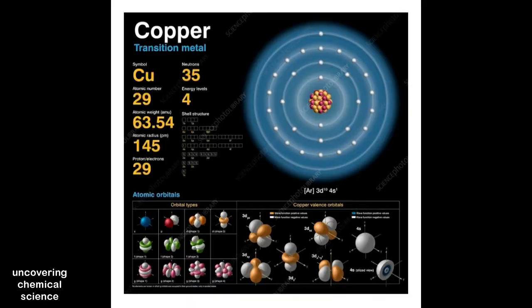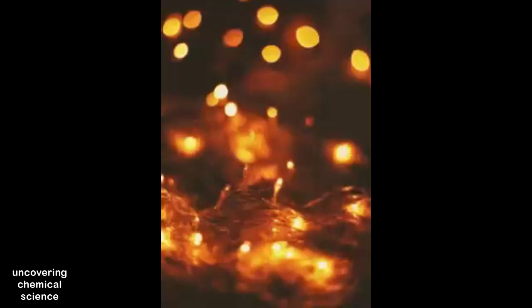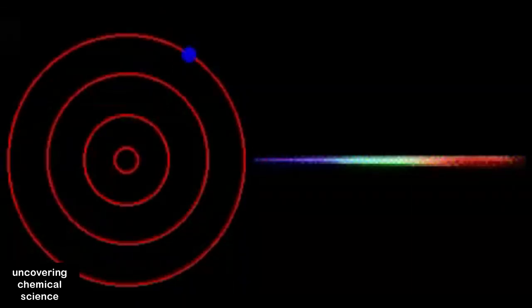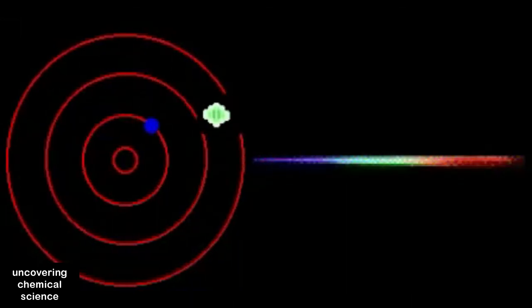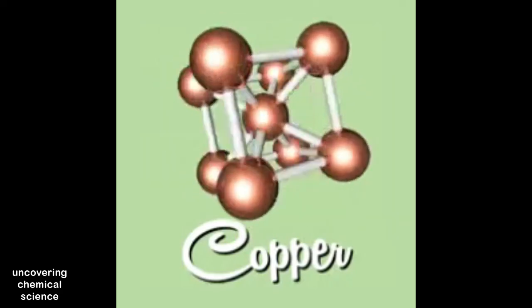If a copper atom has one electron in an excited state and the other atom is in ground state, then both atoms are different. This is because the excited copper atom will emit a bit of light when the electron relaxes back down to the ground state, and the copper atom already in the ground state will not.